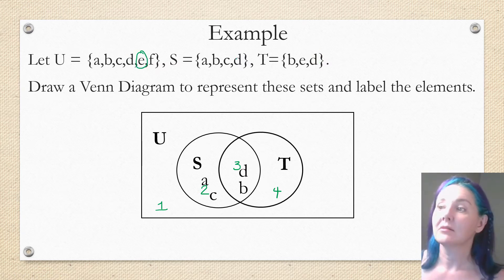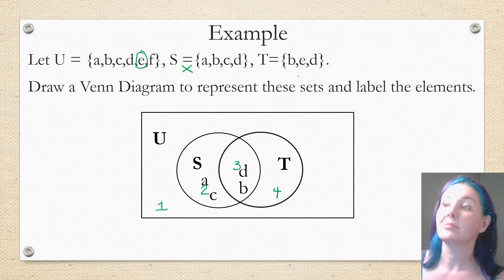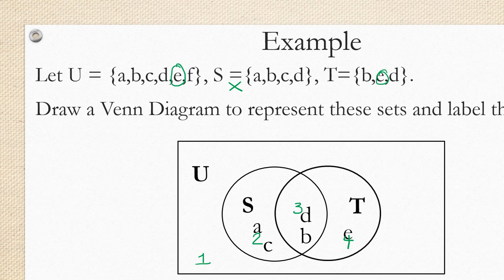Now let's look at element E. Element E is not in S, but it is in T. So which region fits that description? So we have to put the element E in region 4.